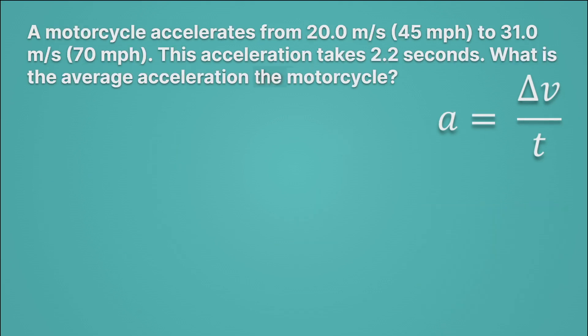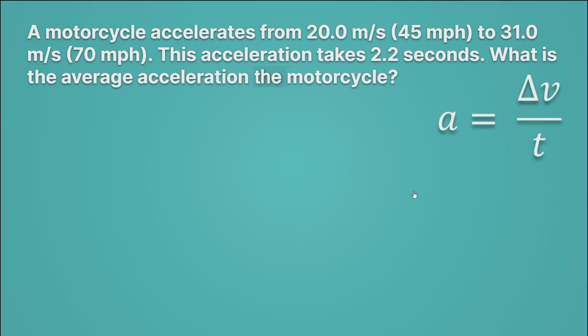In this problem, we're going to calculate the acceleration of a motorcycle as it goes from 20 meters per second — which is about 45 miles per hour — to 31 meters per second — which is about 70 miles per hour. So you can think about going from typical surface street speeds to highway speeds. This acceleration takes 2.2 seconds. What is the average acceleration of the motorcycle? To calculate this, we need the change in velocity, which equals the final velocity minus the initial velocity — final minus initial. The final speed is 31 meters per second minus the initial speed of 20 meters per second, giving us a change in velocity of 11 meters per second.